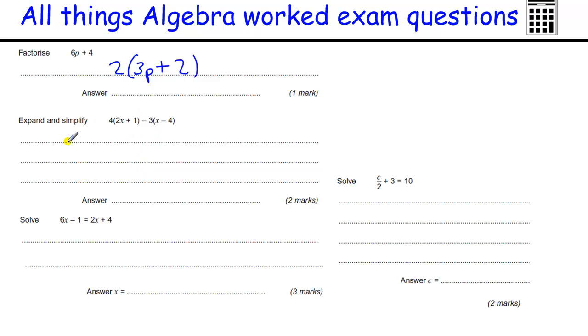Expand and simplify. Okay, so that means multiply out the brackets and then bring it all together. So if we do the first bracket, 4 lots of 2X is 8X, 4 lots of 1 is 4. Now this is the really tricky bit, this gets people time and time again, this bit. Minus 3 lots of X is minus 3X, and minus 3 lots of minus 4 is 12, plus 12.